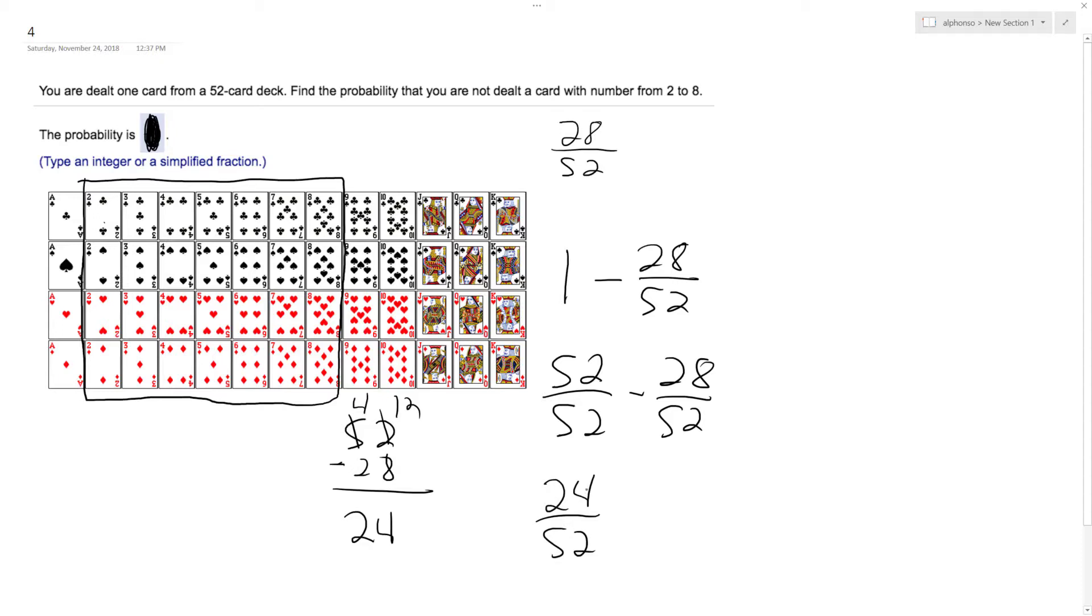Alright, so the common factor here, I can pull out a 4. Yeah, so 4 times 6. This becomes 13, so these cancel out. So I got a 6 out of 13 chance.